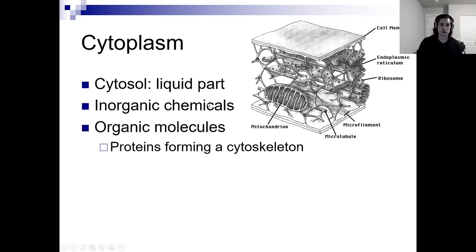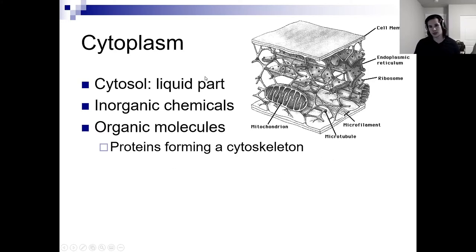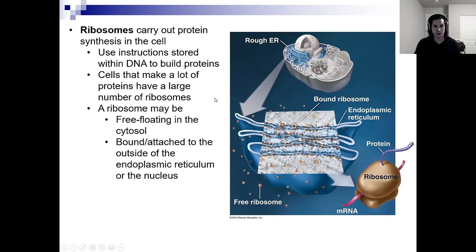Cytoplasm — the juice of the cell. The liquid part is called cytosol. The cytoplasm includes your cytosol, inorganic chemicals like ions, and organic molecules such as proteins forming a cytoskeleton. Your cytoplasm is all that junk within the cell that's not organelles specifically — all the nonspecific stuff. The cytosol is the liquid part.